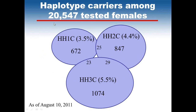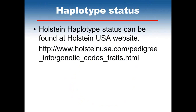Looking at females, there were a little over 20,000 Holstein females tested with slightly different frequencies. Haplotype 1 has a lower frequency in females at 3.5%, Haplotype 2 at 4.4%, and Haplotype 3 at 5.5%. There were 25 females that were carriers for both 1 and 2, 23 that were carriers of 1 and 3, and 29 that were carriers of 2 and 3. This raw data and information on individual animals can be found on the Holstein website, organized alphabetically by the animal's name.